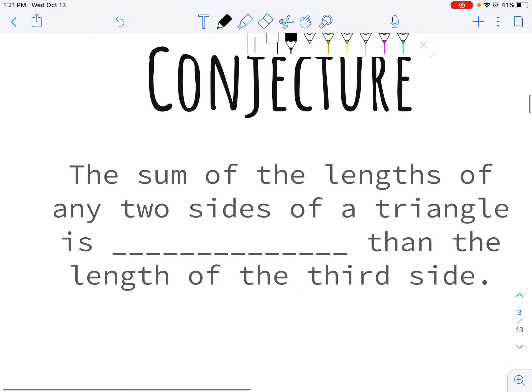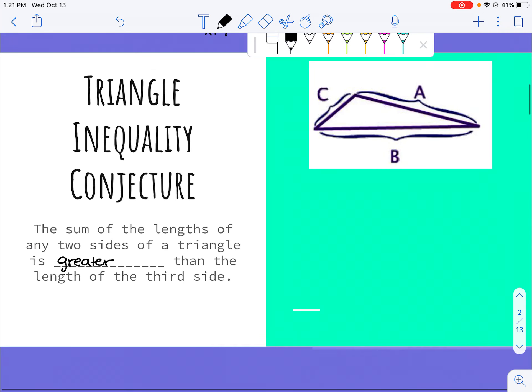It says that the sum of the lengths of any two sides of a triangle is greater than the length of the third side.